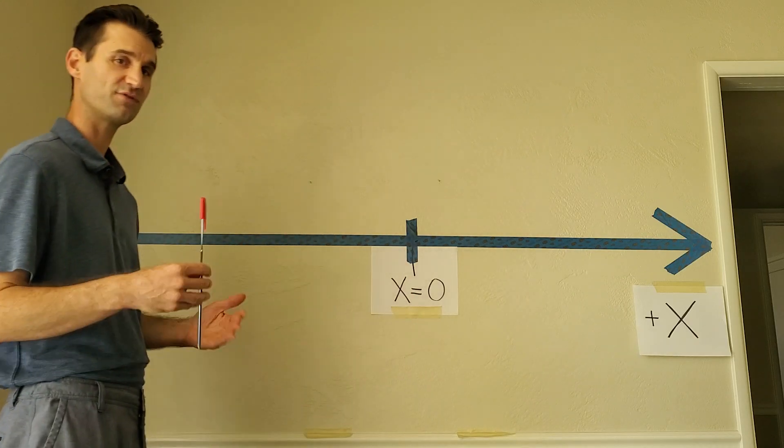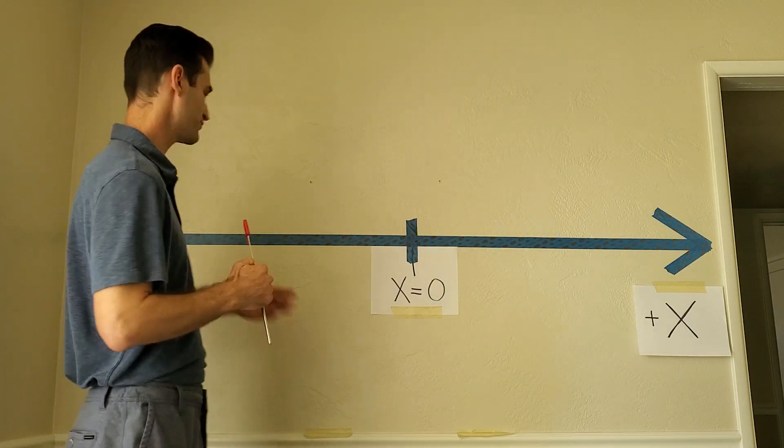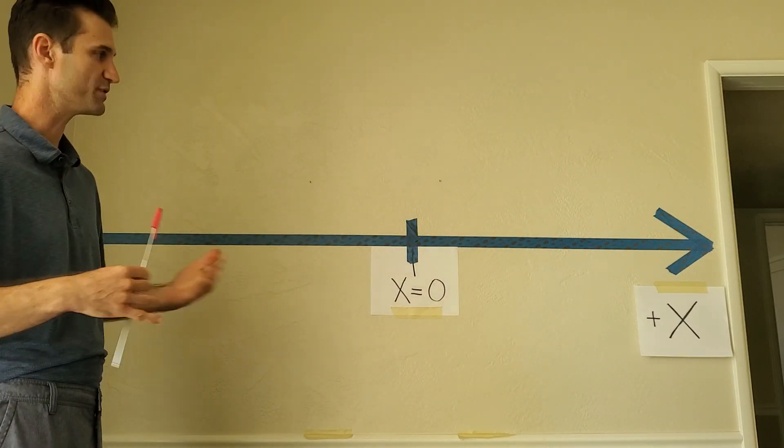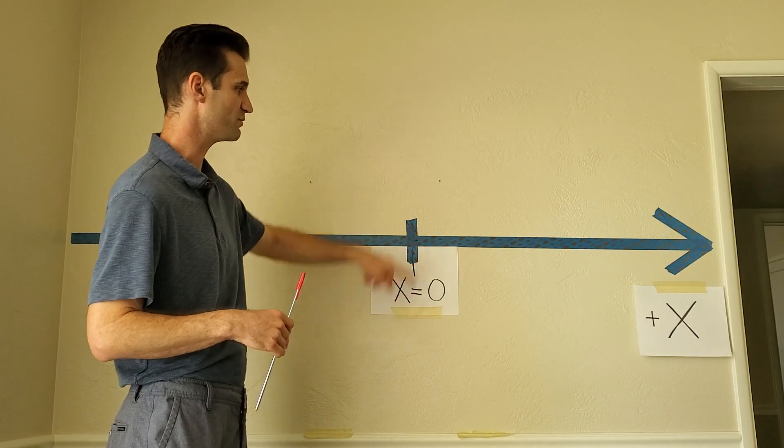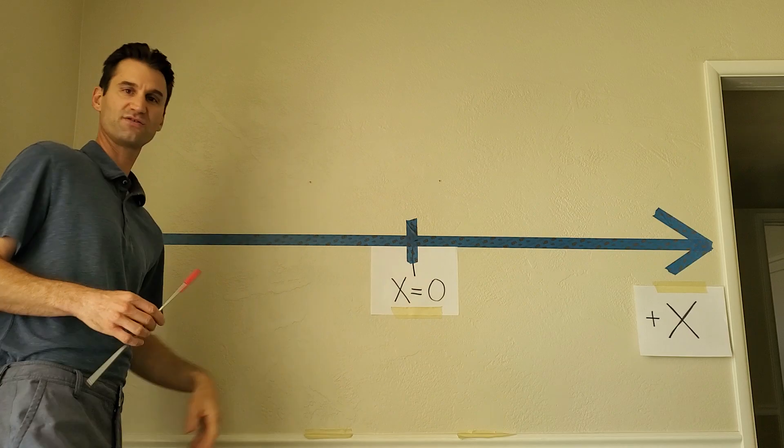So we're going to talk about these three vectors: displacement, velocity, acceleration, in one dimension. I've drawn a one-dimensional axis here. It's horizontal. We usually call it the x-axis. I've placed an origin here, x equals zero. The positive direction is to the right, negative direction is to the left.